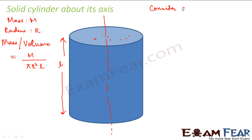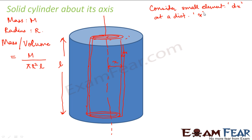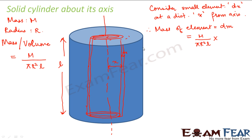So let us consider a small element. We will consider a small cylindrical element — a very thin element. We assume that the thickness of this small element is dx and the distance of this element from the axis is x. So we have a small element of thickness dx at a distance x from the axis. Therefore, the mass of the small element dm will be equal to mass per unit volume into the volume of the small element.